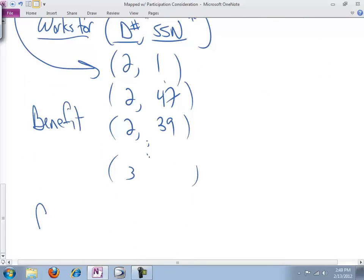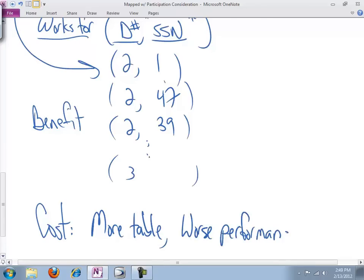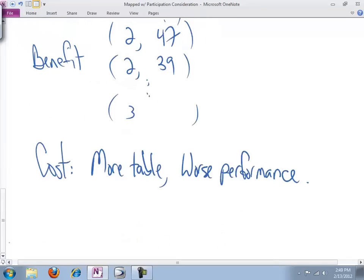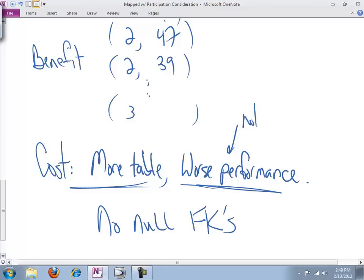What's the cost? I hope you're yelling at me, although I can't hear you. The cost is more tables. Which in turn means worse performance. And I would say, yes, that's excellent. Good for you. Take the rest of the night off. That's exactly right. More tables, worse performance. No null FKs. And keep in mind, in terms of worse performance, still not as bad as stable.